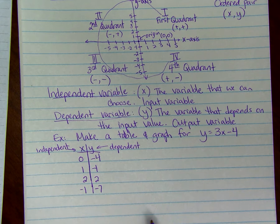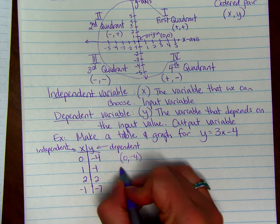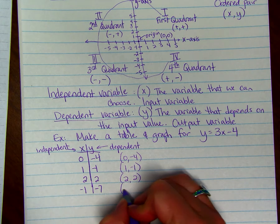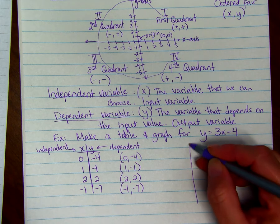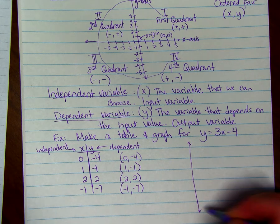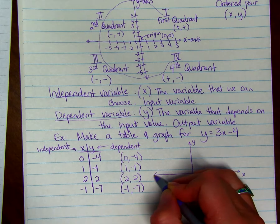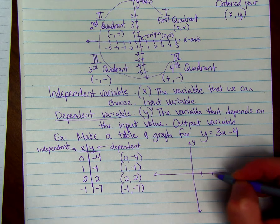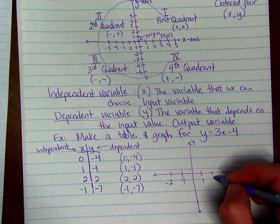We can graph this and use each of these like points. So we'd have 0 negative 4, 1 negative 1, 2 2, and negative 1 negative 7. So we draw our coordinate plane and it looks like our x values go up to 2 and negative 1, so we'll just put 2 on.